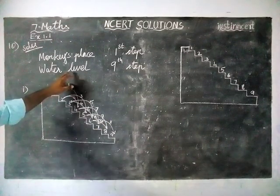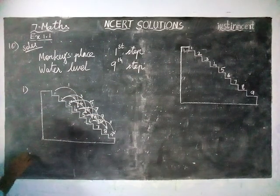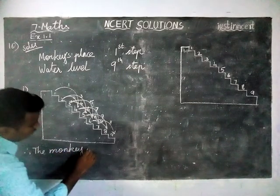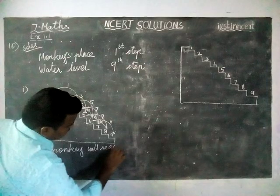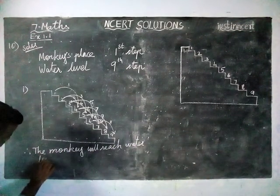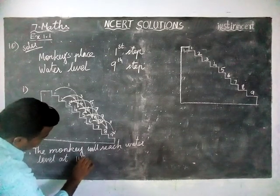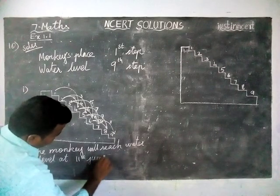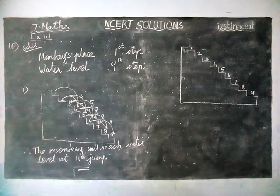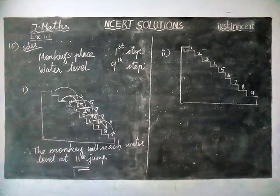Therefore, the monkey will reach the water level at the eleventh jump — after 11 jumps it will reach the water level. Now second question.